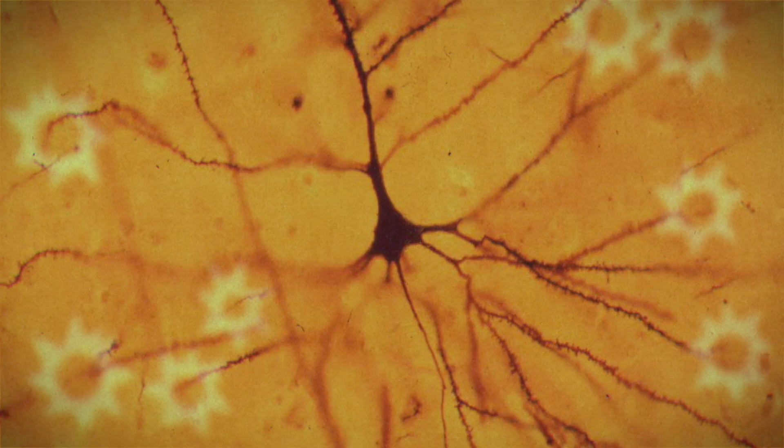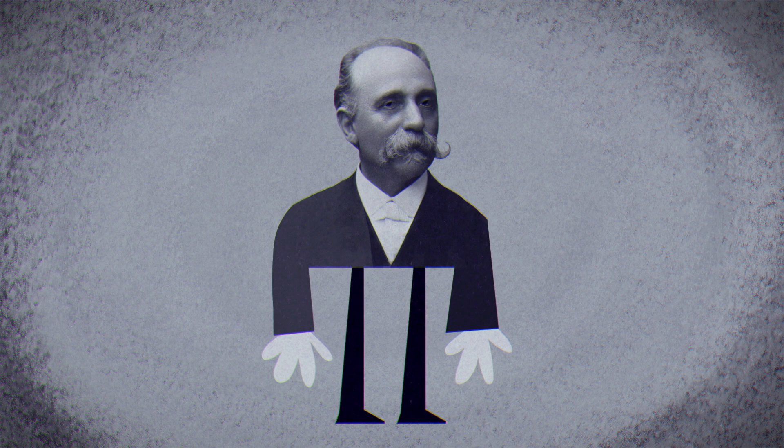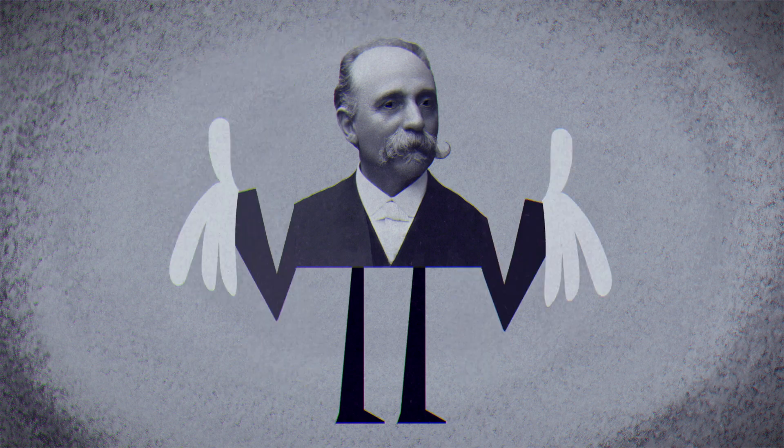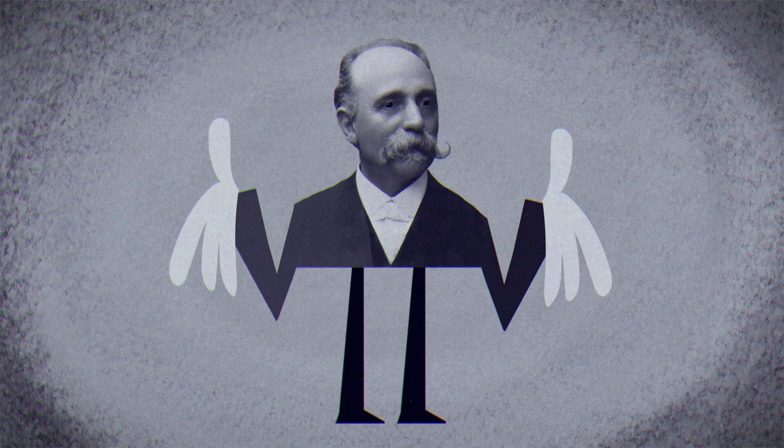Images of these branches became hazy at the ends, making it difficult to determine exactly how they fit into the larger network. But Golgi concluded that these branches connected, forming a web of tissue comprising the entire nervous system.